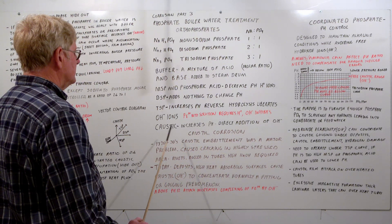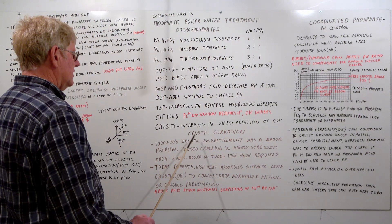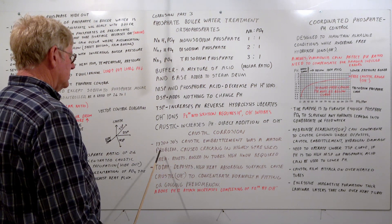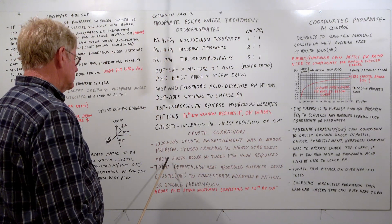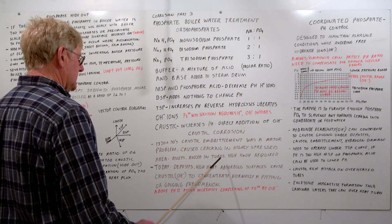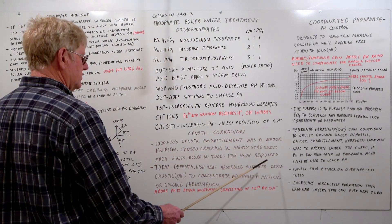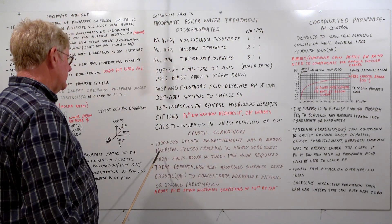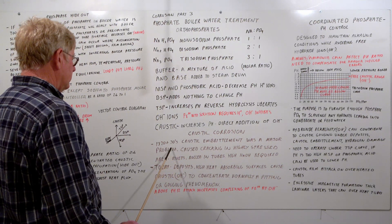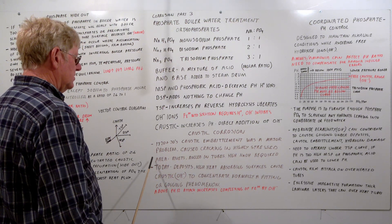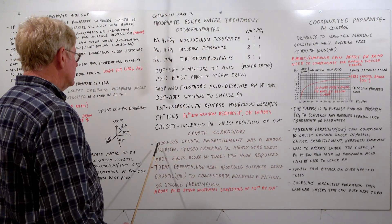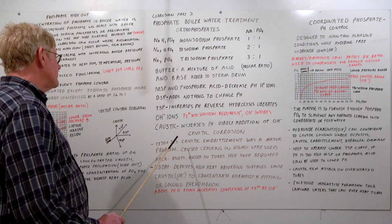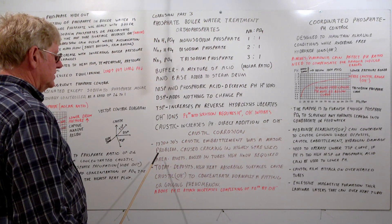Caustic increases pH through direct addition of OH. The main problem with phosphate control is caustic corrosion. In the 1920s and 30s, caustic embrittlement was a major problem — it caused cracking in highly stressed areas, particularly in riveted and rolled tube construction. High sodium hydroxide was required to form this, but even though boiler water may have had low levels, it was capable of concentrating in areas with leaks or under hot plates. One of the reasons phosphate was added to boilers is it handled calcium and magnesium hardness, making a calcium and magnesium phosphate that dropped out as a light sludge, easily blown out of the mud drums.